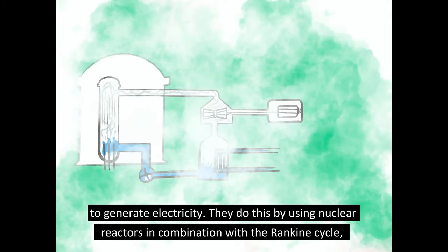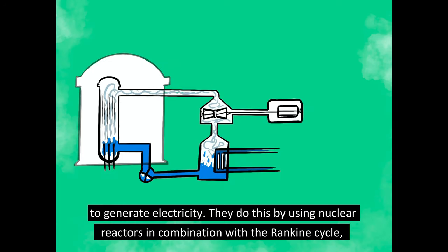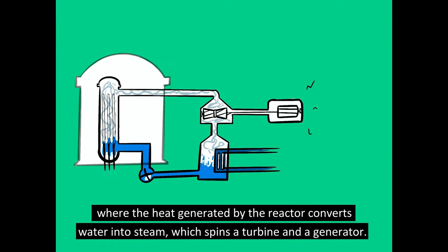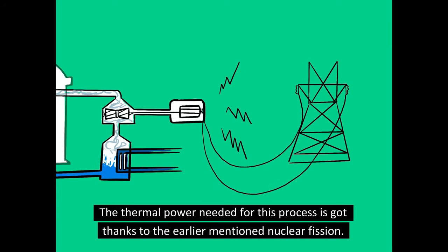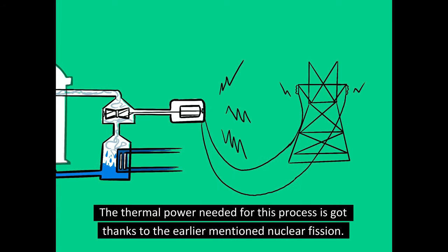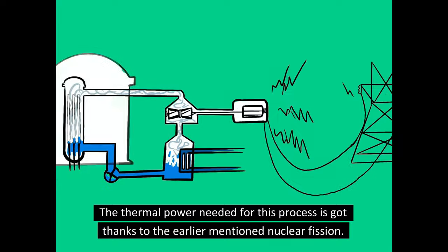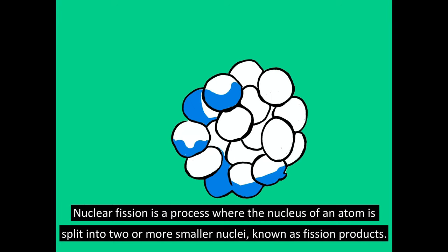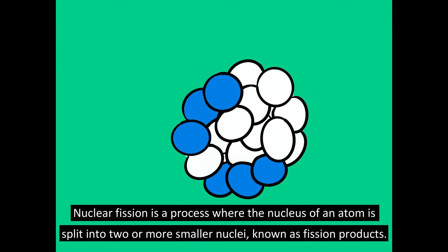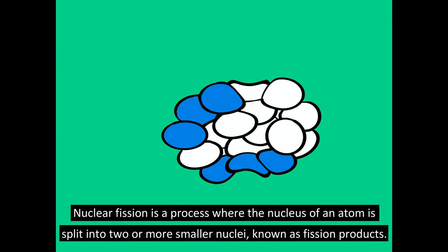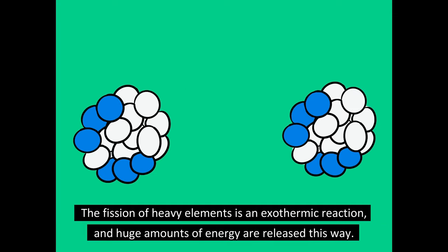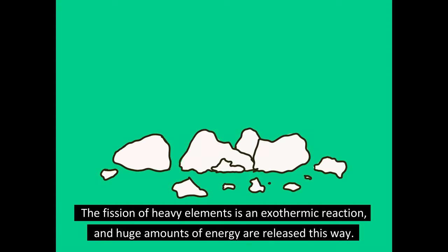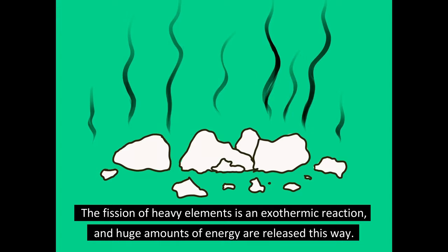They do this by using nuclear reactors in combination with the Rankine Cycle, where the heat generated by the reactor converts water into steam, which spins a turbine and a generator. The thermal power needed for this process comes from nuclear fission — a process where the nucleus of an atom is split into two or more smaller nuclei, known as fission products. The fission of heavy elements is an exothermic reaction, and huge amounts of energy are released this way.